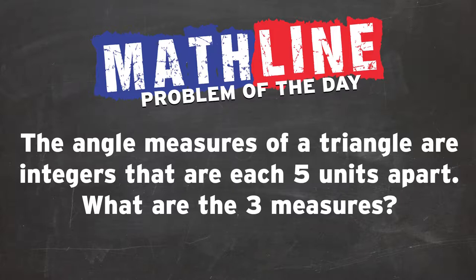They're each five units apart. What are the three measures? Why do I say they have to be positive? Because they're measures of angles of a triangle. They can't be negative degrees. Again, we're going to look for three angle measurements that are each five units apart. So let's go to it.